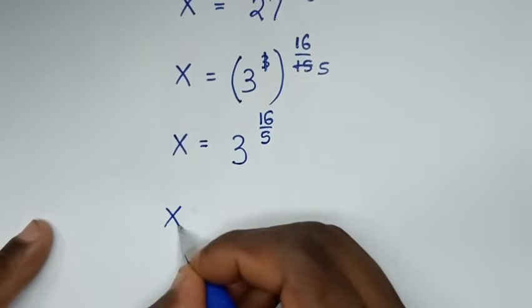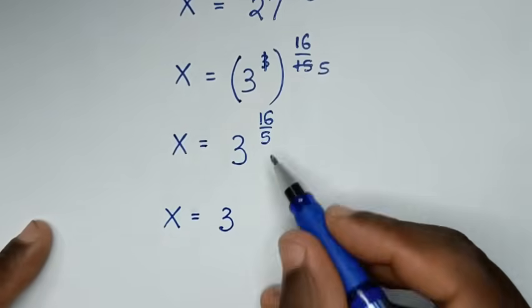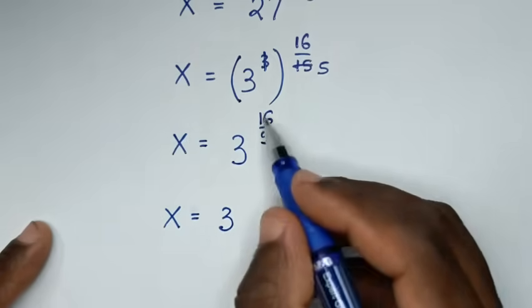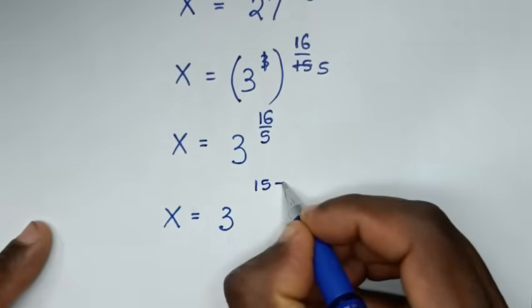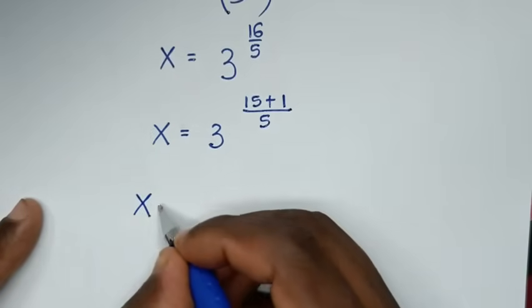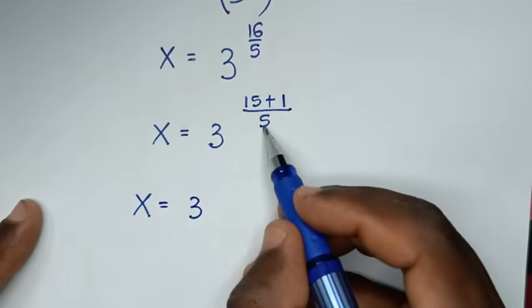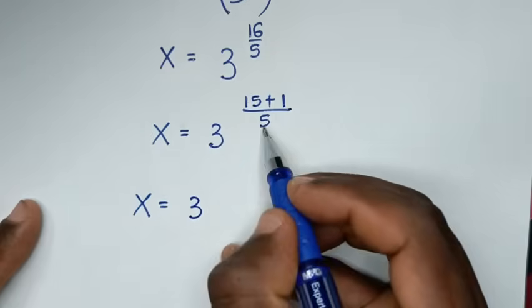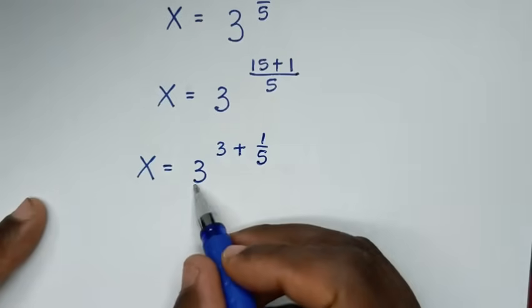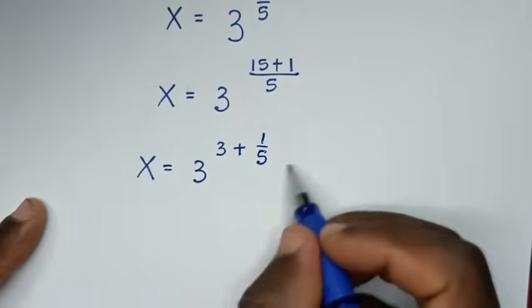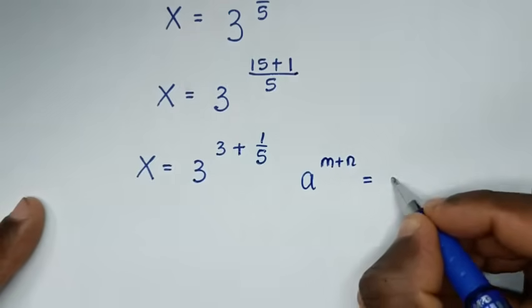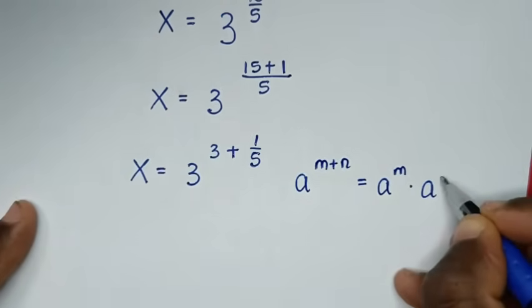Then in the next step, it will be x is equal to 3 to the power of 16 over 5. Now 16 is the same as 15 plus 1, so we change this into radical form: 16 over 5 becomes 15 plus 1 over 5. So it will be x is equal to 3 to the power of 15 over 5 — and 15 divided by 5 is 3 — plus 1 over 5. Then from here, 3 to the power of 3 plus 1 over 5. This part is in the form of a to the power of m plus n, which is equal to a to the power of m times a to the power of n.